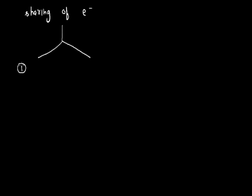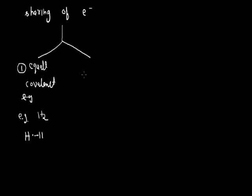Sharing of electrons can happen in two ways. First, when the shared electrons come from both species — that means it's a case of equal sharing, determined as a covalent bond. For example, in the hydrogen molecule, one electron comes from each hydrogen atom. In the second case, the shared electrons come from one side — that is the case of unequal sharing, which is termed as a coordinate bond.